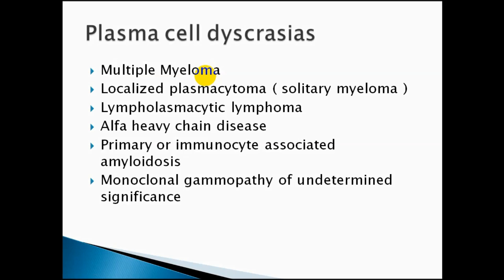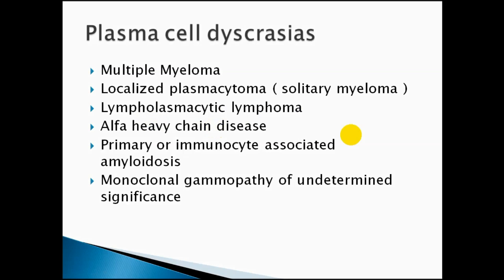We have a wide list of plasma cell dyscrasias. The first is multiple myeloma — from the name, we have multiple lesions, and myeloma means cancer of the bone marrow. Localized plasmacytoma is a solitary myeloma, same as multiple myeloma but with only one area affected. Lymphoplasmacytic lymphoma, also known as Waldenström's macroglobulinemia, presents with elevated serum IgM — a very large antibody composed of five units, hence the name macroglobulinemia.